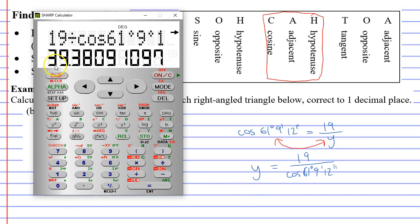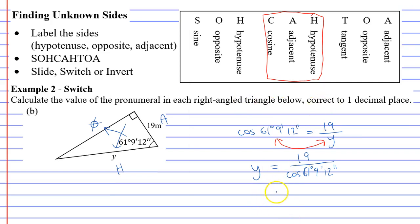And this comes out to 39, and we want to do it to one decimal place. So we'll round it up. 39.4. And this is in metres. So our solution needs to be in metres. And that concludes example two.